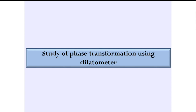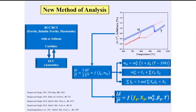As we all know, dilatometry is a very powerful technique because we can detect transformation as it happens. We usually use it to construct CCT diagrams or detect transformation start and finish temperatures, but we can do a much more quantitative analysis. The change in length is directly proportional to the fraction of the phases and their lattice parameters. The lattice parameter depends on temperature, thermal expansion coefficient, and the presence of alloying elements. At any point, the sum total of all phases and mass balance must hold.